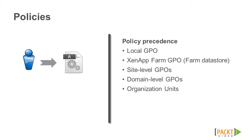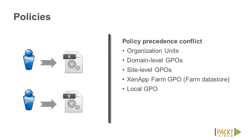However, in the event of a conflict, policy settings that are processed last can overwrite those that are processed earlier. This means that policy settings take effect in the following order: organizational units, domain level GPOs, site level GPOs, ZenApp farm GPOs, and local GPOs.